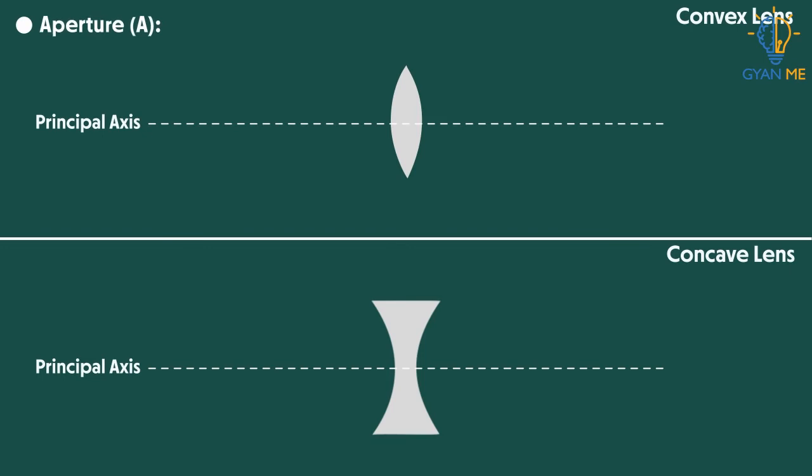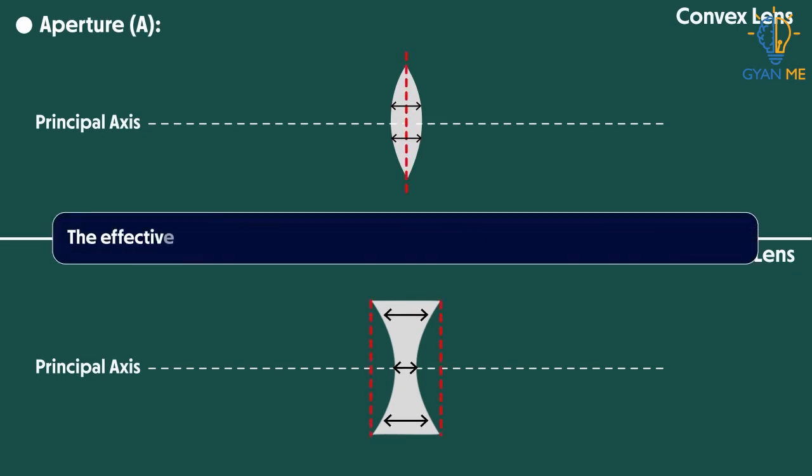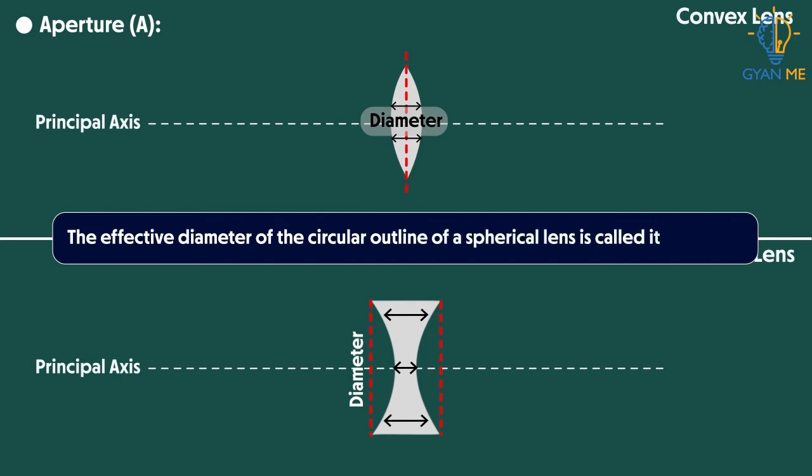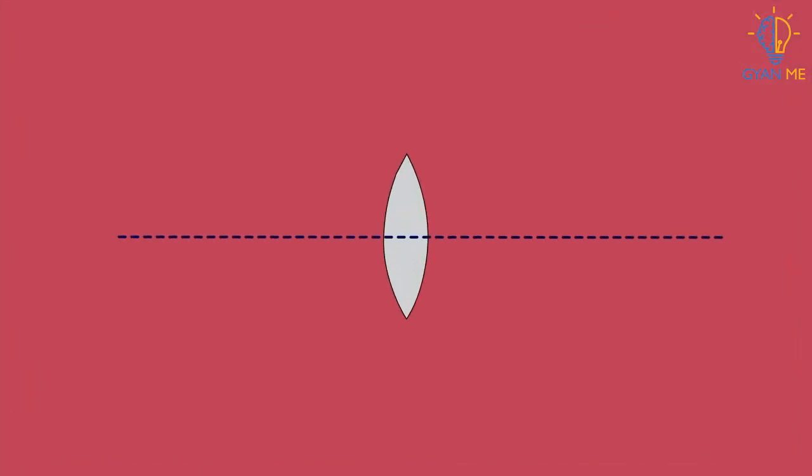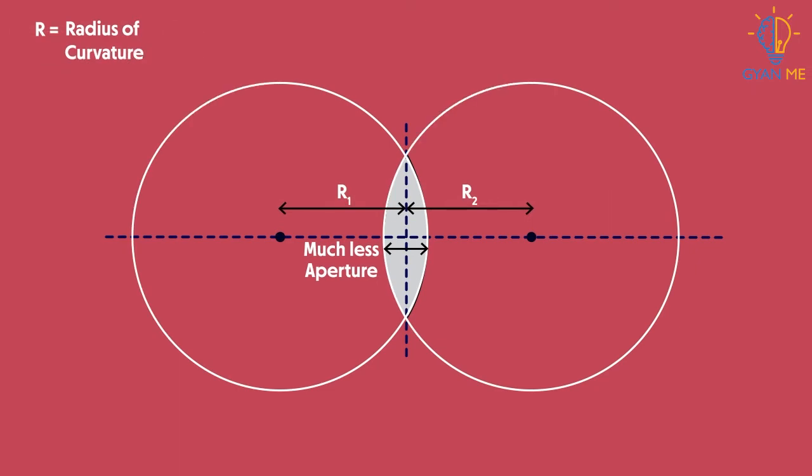Next term is aperture A. The effective diameter of the circular outline of a spherical lens is called its aperture. Students, throughout this chapter, we shall confine our discussion to such lenses whose aperture is much less than their radius of curvature and whose